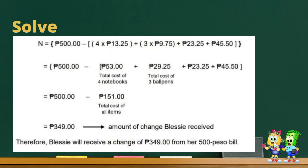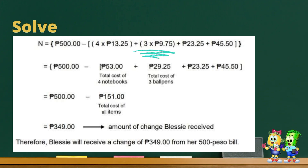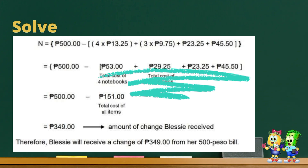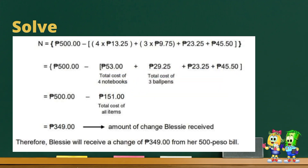Let us now solve the problem. First, multiply four times thirteen pesos and twenty-five centavos — the answer is fifty-three pesos. Next, multiply three times nine pesos and seventy-five centavos — the answer is twenty-nine pesos and twenty-five centavos. Next, add fifty-three pesos, twenty-nine pesos and twenty-five centavos, twenty-three pesos and twenty-five centavos, and forty-five pesos and fifty centavos. The total cost of all items is one hundred fifty-one pesos. Then subtract one hundred fifty-one pesos from five hundred pesos: five hundred pesos minus one hundred fifty-one pesos equals three hundred forty-nine pesos. Therefore, Blessie will receive a change of three hundred forty-nine pesos.